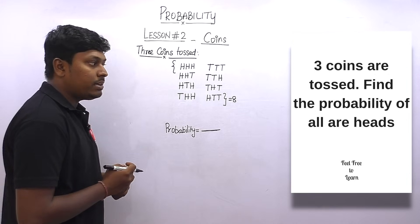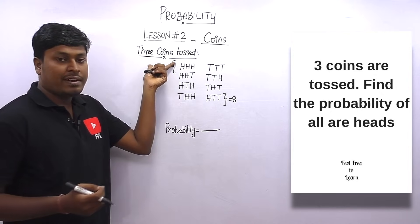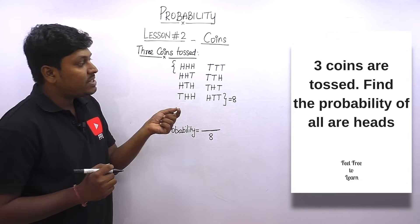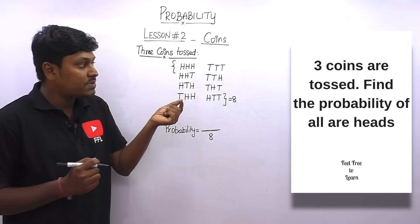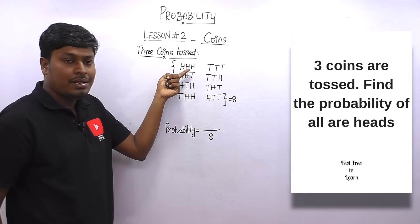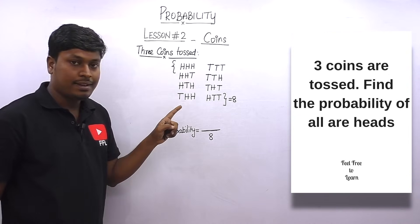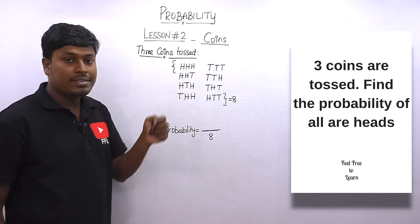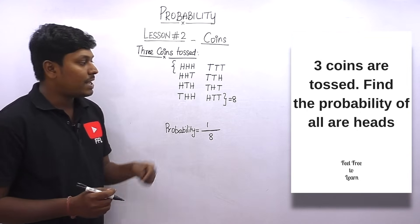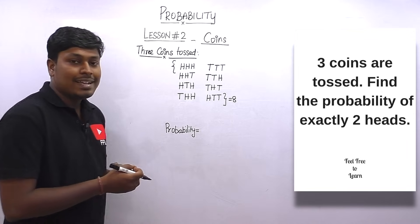Question 4: Three coins are tossed — find the probability of all heads. Three coins tossed means total possibility = 8. Only one outcome has all three coins showing heads. So probability = 1/8.